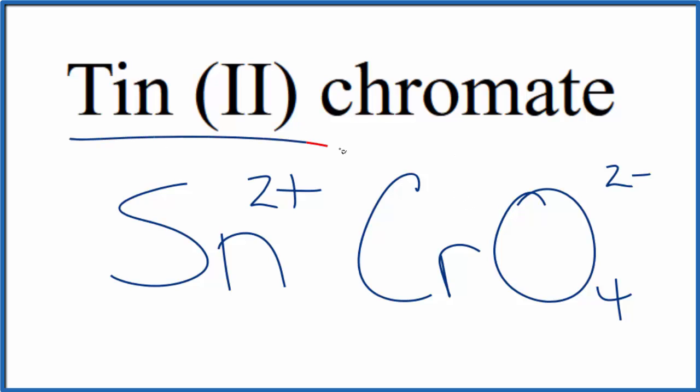So we have tin, this is a transition metal, and then we have this polyatomic ion here. We need to make sure these charges balance. We have a net charge of 0.